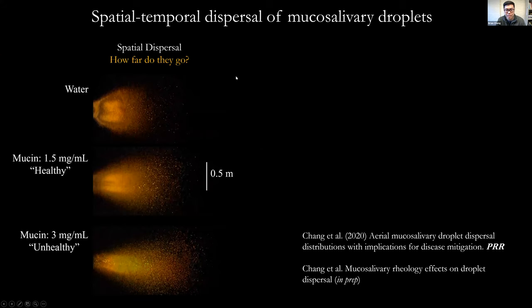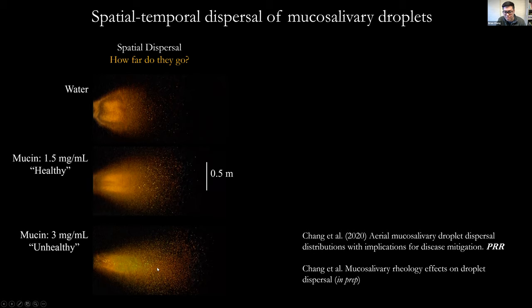One of the first things we looked at was spatial dispersal — how far the droplets go and where they land. A key question is how the rheology of the fluid affects dispersal patterns. Here we have simply water being exhaled, and as we increase the mucin concentration — basically the stickiness of the fluid — we see different dispersal patterns. As you increase the mucin level to that of a relatively unhealthy person, we start to see narrower lobes but droplets traveling much further distances. The number of large droplets, which appear as speckles like stars, also increases at higher mucin concentrations.